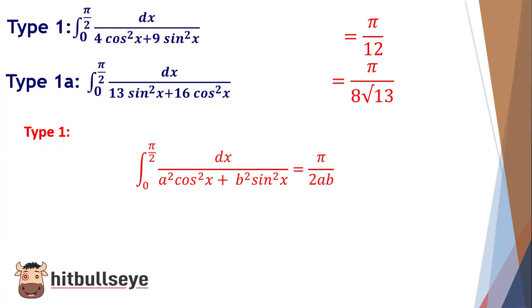If you ever face this type of question where the limit ranges from 0 to π/2 and the expression is in the form shown on screen, then your solution will always be π/(2ab).